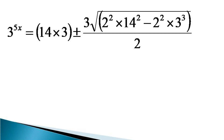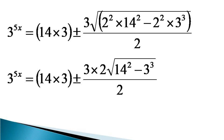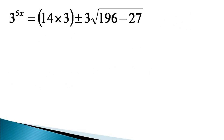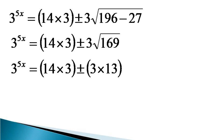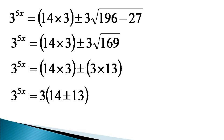This becomes 14 into 3 plus or minus 3, with the terms inside the square root expressed as 2 squared into 14 squared minus 2 squared into 3 cubed, divided by 2. It becomes equal to 14 into 3 plus or minus 3 into 2, into the square root of 14 squared minus 3 cubed, divided by 2. So 3 raised to the power 5x equals 14 into 3 plus or minus 3 times the square root of 196 minus 27, which equals 14 into 3 plus or minus 3 times the square root of 169. Since the square root of 169 is 13, taking 3 common gives 3 raised to the power 5x equals 3 into 14 plus or minus 13, giving two values: 81 and 3.